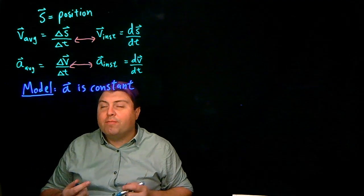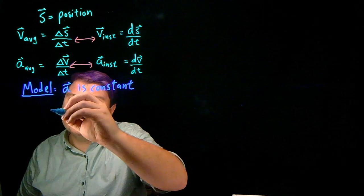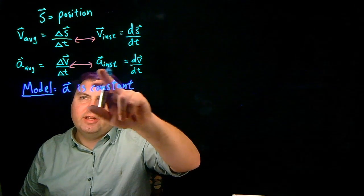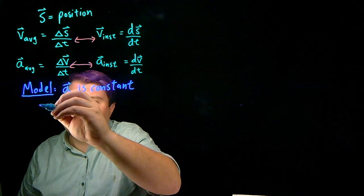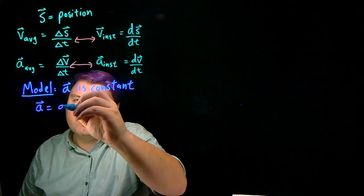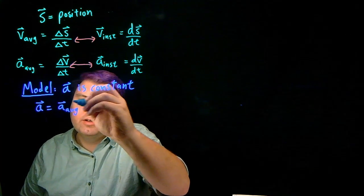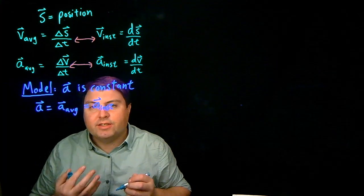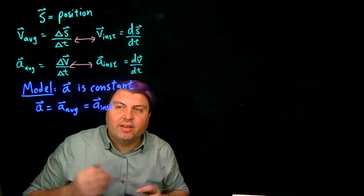And then from this, we can get a result. The result of this is that if the acceleration is constant, it doesn't matter whether I look at the instantaneous or the average. This a vector is going to equal a average is going to equal a instantaneous. Because it's not changing, it doesn't matter how I calculate it, it's going to be the same.